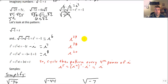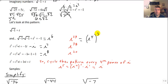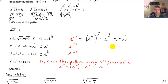For i to the 23rd, we've gone through the cycle 5 times plus an extra 3. So i to the 23rd is i to the 4th raised to the 5th power — that's 20 — times i to the 3rd. Therefore i to the 23rd is equivalent to i to the 3rd, or the opposite of i.